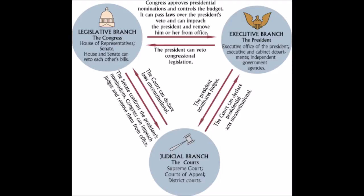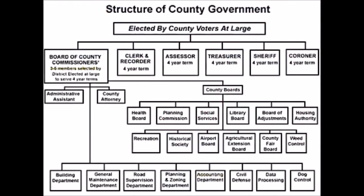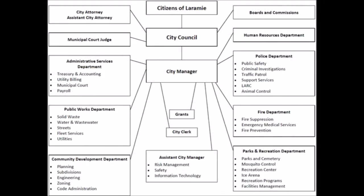This separation of powers also enjoys checks and balances, which means that if one branch becomes tyrannical, then one or both of the other two can act to halt the misbehaving branch from getting too much out of control. You must keep in mind that the separation of powers are not just horizontal, but also vertical — each American government has its own three branches, generally speaking. State governments have their own legislatures, governors, and judiciary. County governments have commissioners, sheriffs, and courts. Municipalities, that is city governments, commonly have city councils, mayors, and judges.